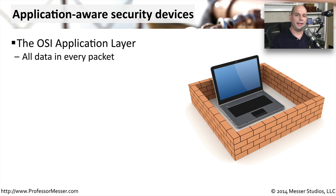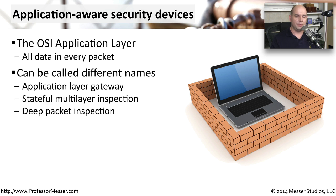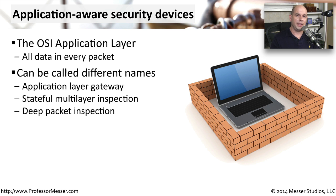Today's modern security devices are looking at everything that goes by on the network, examining it based on the applications you might be using. This is talking about the OSI model's application layer, examining every bit of data that goes through the network. No longer are we just interested in port numbers or protocols. We're interested in the entire application. These are called many different names — an application layer gateway, a stateful multi-layer inspection device, or deep packet inspection — but all of those really mean the same thing. We're looking at every single bit and byte going over the network, doing a protocol decode, and examining what application that's associated with, including how the application communicates back and forth between devices.